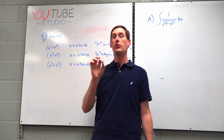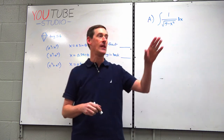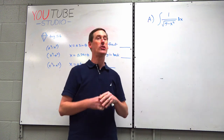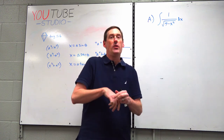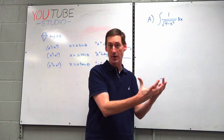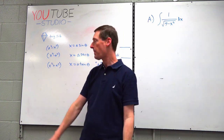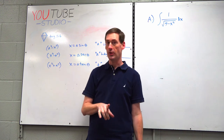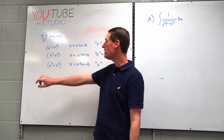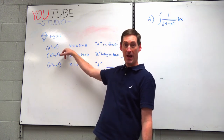This subject is called trig substitution. Some people erroneously call the last section, 9-5, trig substitution — but that's just u-substitution with some trig problems, like the tangent-secant combo or the sine-cosine combo. Trigonometric substitution is actually when you don't do u-substitution; we're going to do x-substitution today.